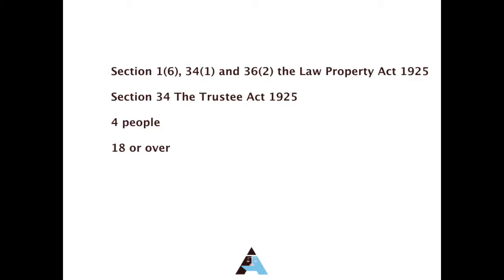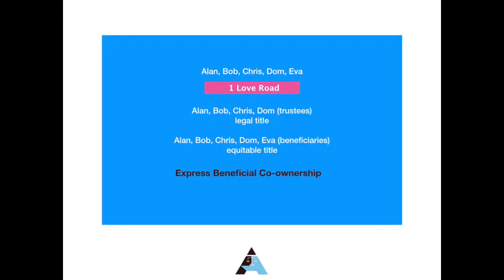Sections of the Law of Property Act 1925 state that the legal title must be held as a joint tenancy. In addition, the Trustee Act 1925 states that the maximum number of people who can be on the legal title is four. This means that the amount of signatures required on a conveyance is four. If land is sold to more than four people, those on the legal title will be the first four on the conveyance. The persons who hold the legal title must be 18 or over and willing to be on that title.